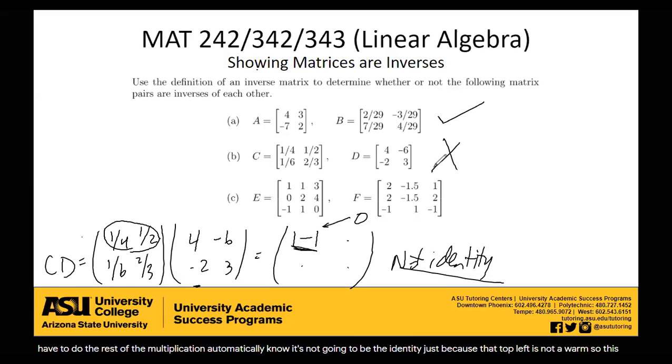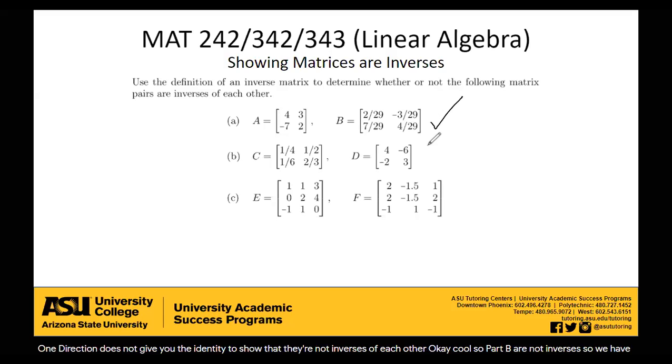So this one, they are not inverses of each other. And remember, just as it suffices to show one direction gives you the identity, it also suffices to show one direction does not give you the identity to show that they're not inverses of each other. So part B, they're not inverses. So we have one more left. First one, they were. Second one, they were not. Let's check out our last one.